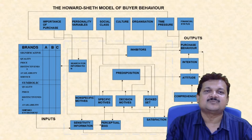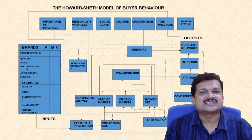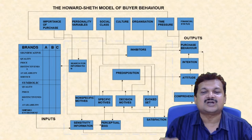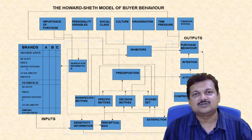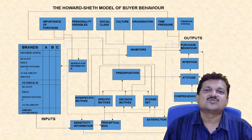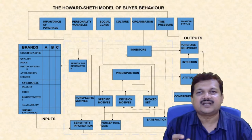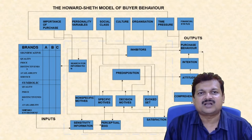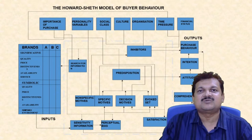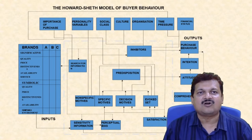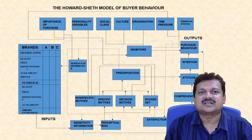In the input stage, sensitivity to information matters — if customers are not sensitive to certain information, they reject it. Perceptual bias is also important: if a customer is strongly biased toward a brand like Sony, even when Philips shows good attributes, they will not select Philips. This is all about the Howard-Sheth model explaining how consumers take decisions.